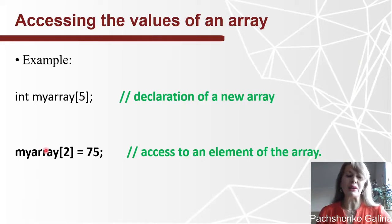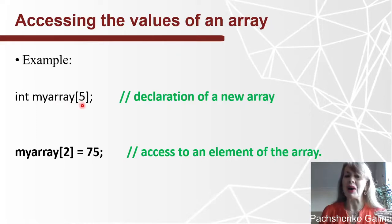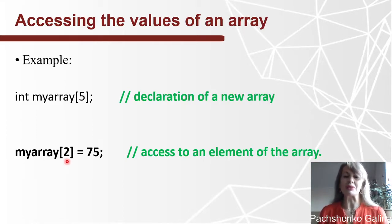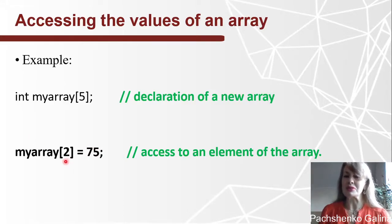Example. In this line, this is the declaration of a new array called myArray. This is the name of the array; it consists of five elements of type int. And here we access an element of the array — we assign the value 75 to the element with index 2, which is the third element.